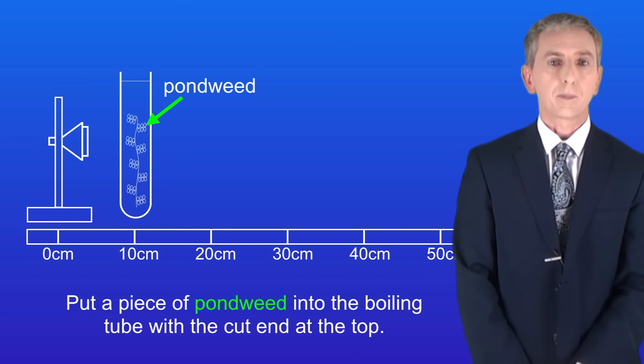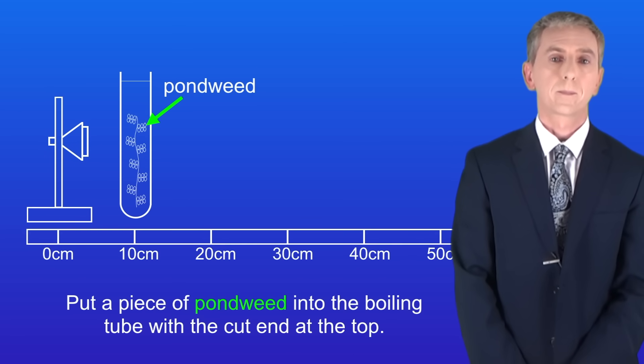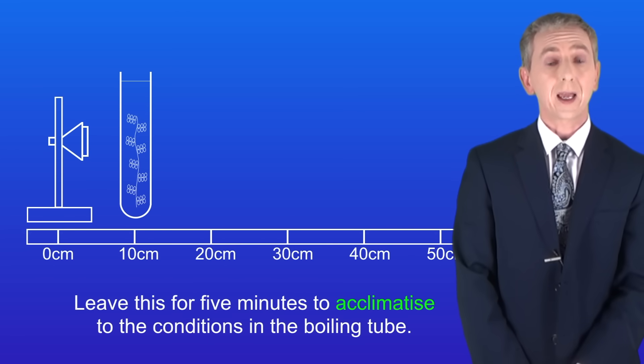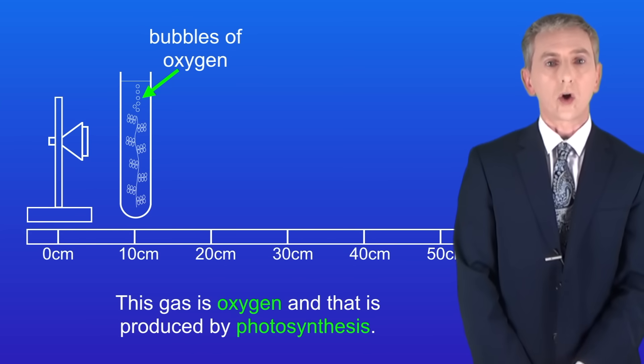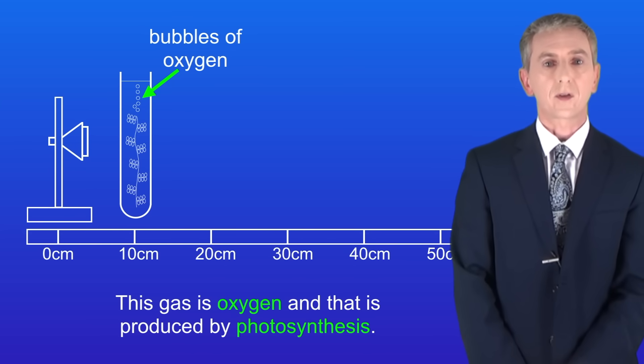Next we put a piece of pondweed into the boiling tube with the cut end at the top and leave this for five minutes to acclimatize. We should see bubbles of gas being produced from the cut end of the pondweed. This gas is oxygen produced by photosynthesis.